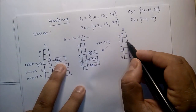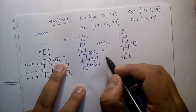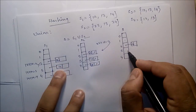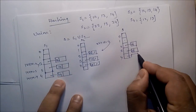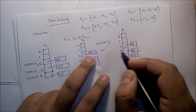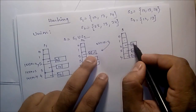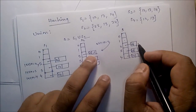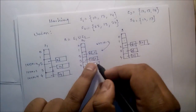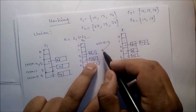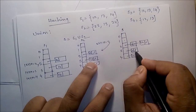Starting with S1, first we store all the data from S1. Now check the first element from S2, which is 22. 22 modulo 10 is 2 — check that position. It is not a match, so store 22 here. Next is 13: 13 modulo 10 is 3, compare with 13 at index 3 — it is a match, so no need to insert.